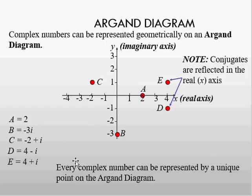To summarize: every complex number can be represented by a unique point on an Argand diagram. Any complex number can be plotted — whether it has no imaginary part like A, or no real part like B. You can plot any complex number on an Argand diagram.